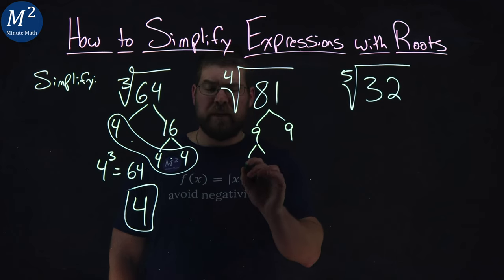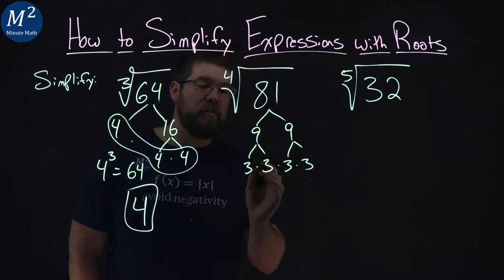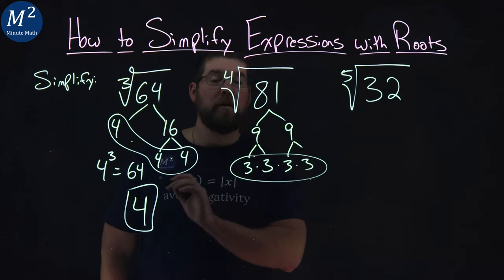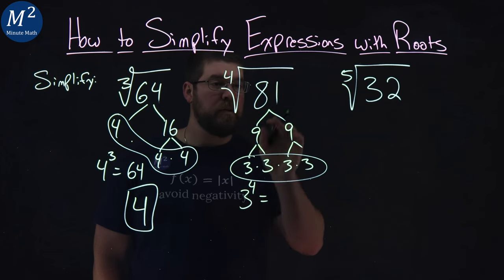Well, 9 is a 3 times a 3. And this 9 is a 3 times a 3. And notice here, we have four 3's going on. So that's 3 to the fourth power is equal to, right?